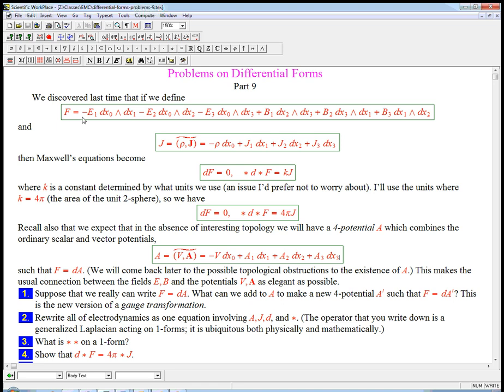This top here is just a summary. If we define F to be this two-form that combines the E and B fields together in a certain way, and the signs, there's a certain amount of convention to the signs, but this is one that works out. And if we define a one-form J by doing two things, we take rho, which is the charge density, and the vector J, which is the ordinary current density from classical presentation of electrodynamics.